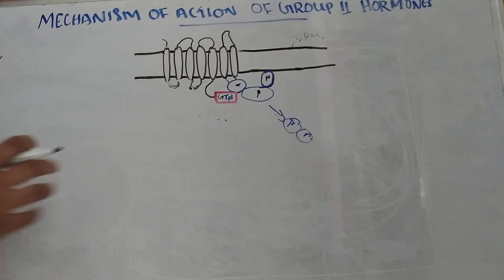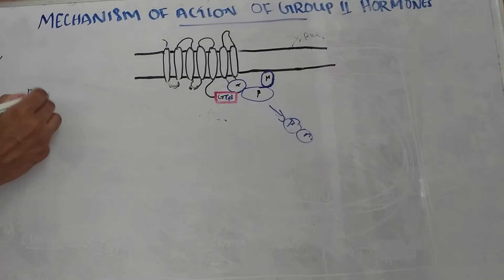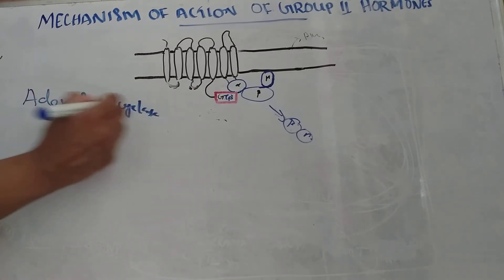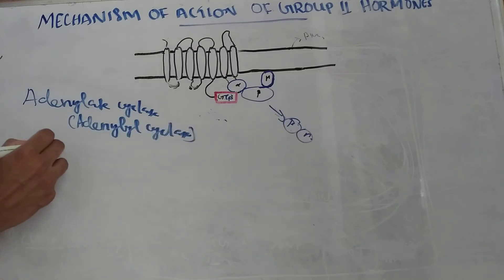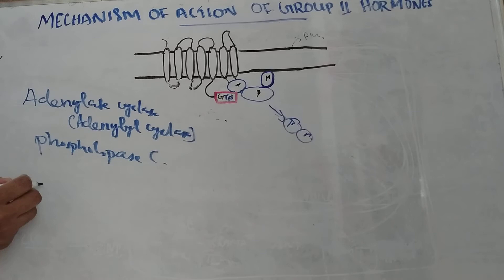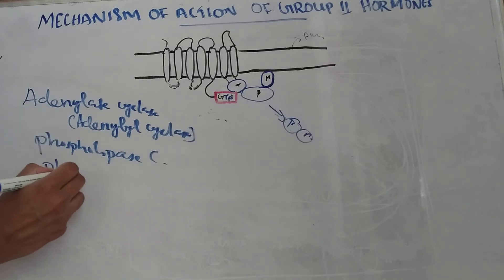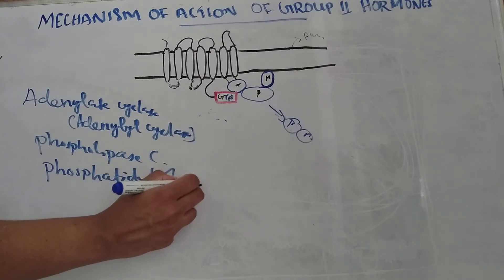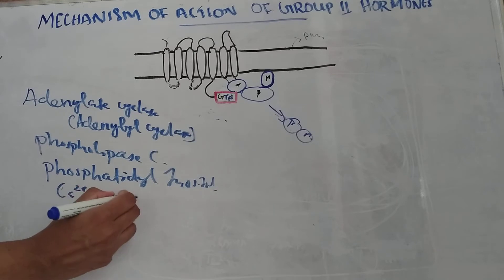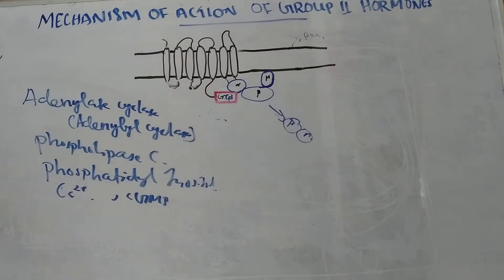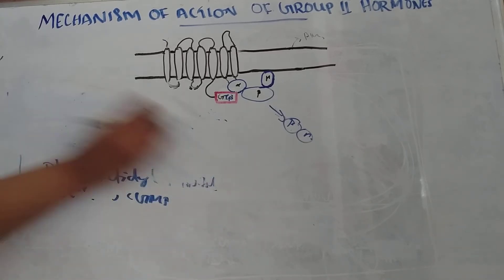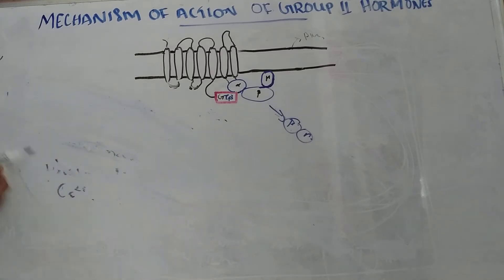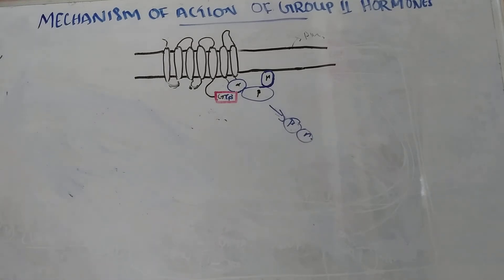This activated G protein can activate adenylate cyclase, phospholipase C, phosphatidyl inositol, calcium, cyclic GMP, etc. Now let us see the mechanism of action. For the first type, the second messenger is cyclic AMP.